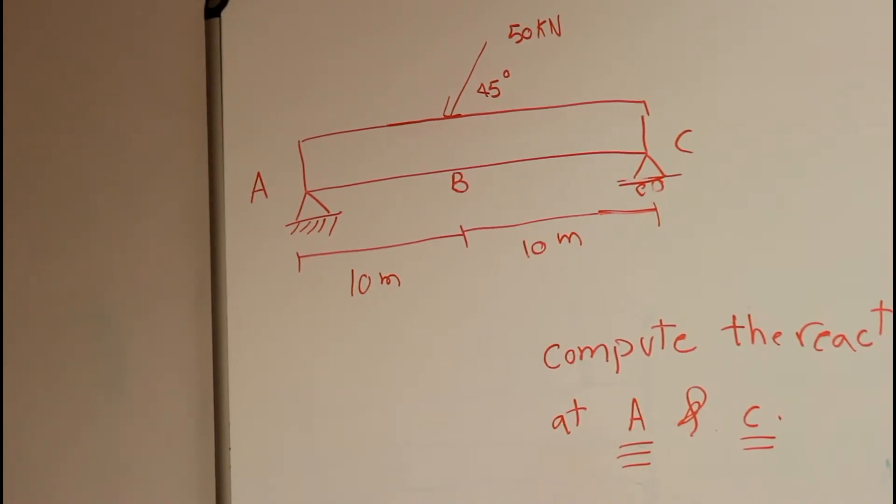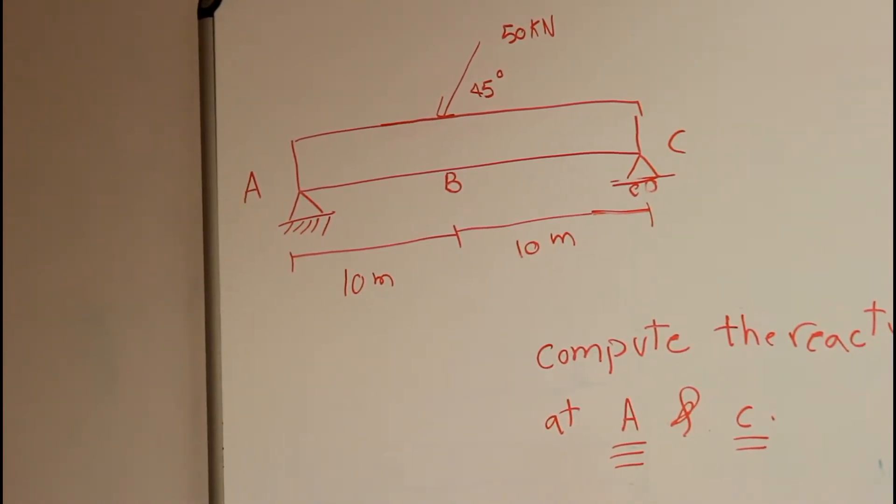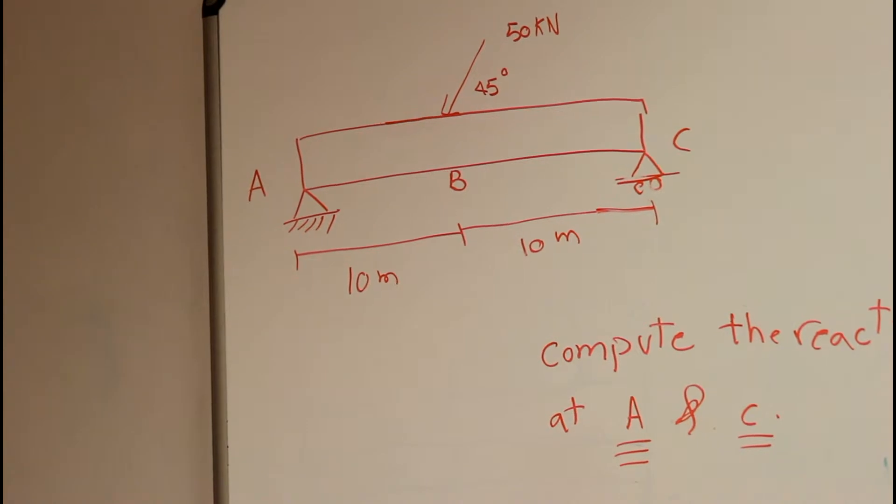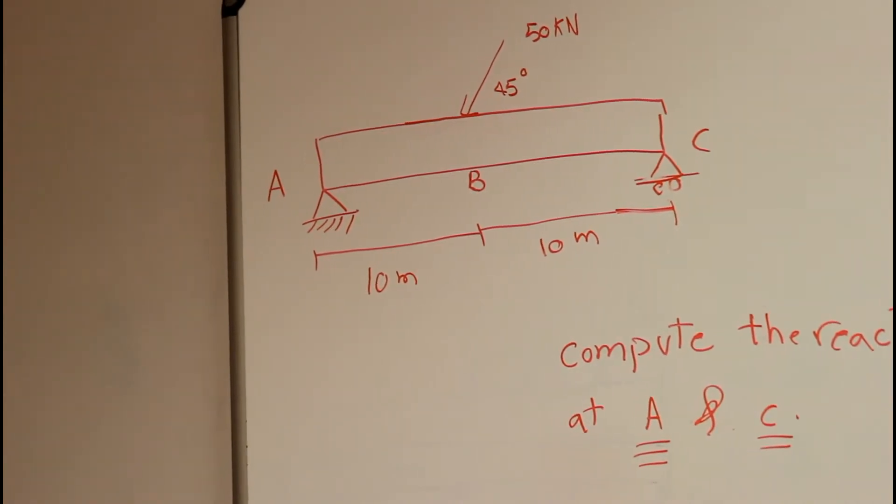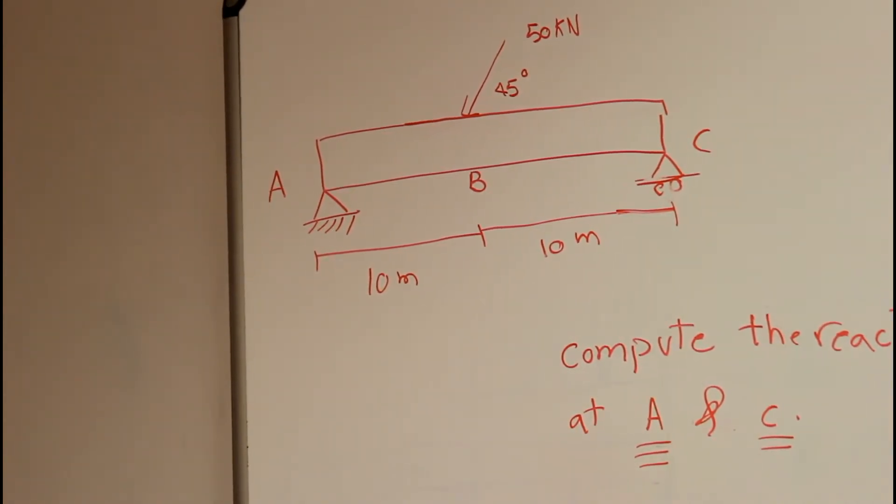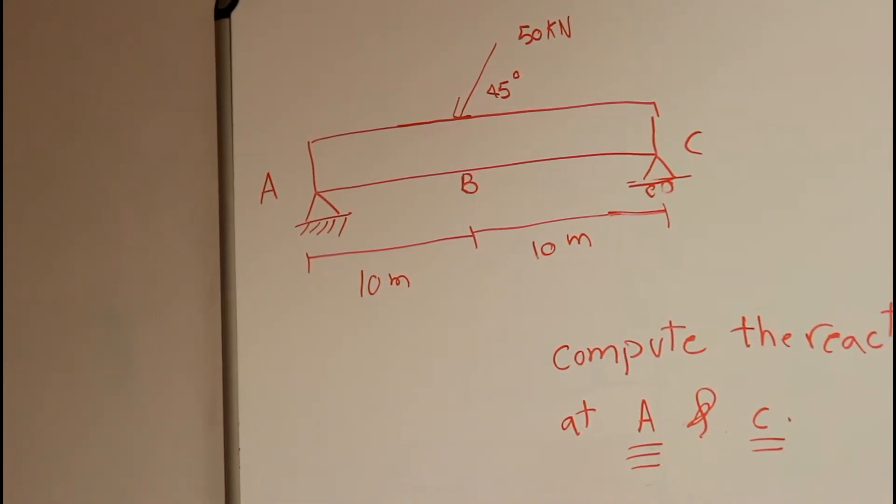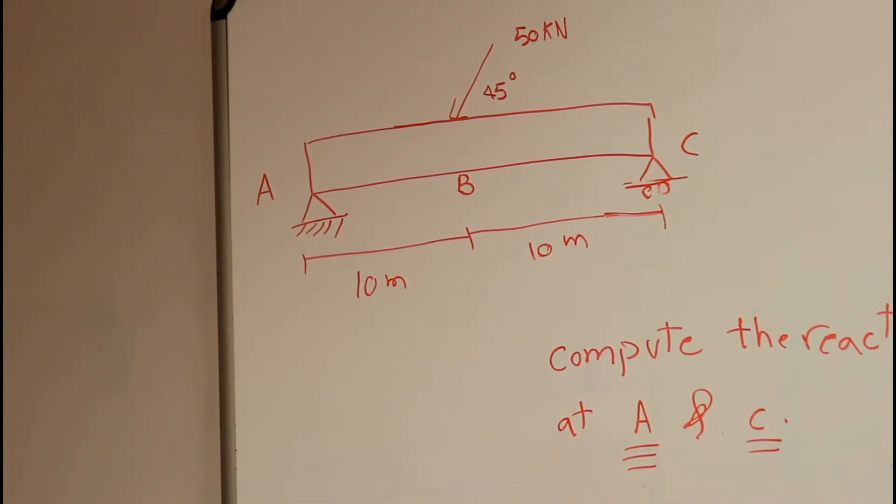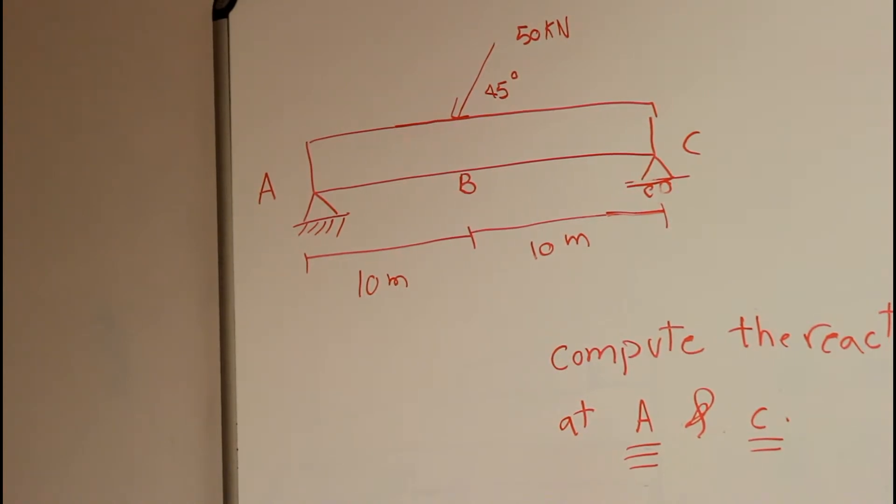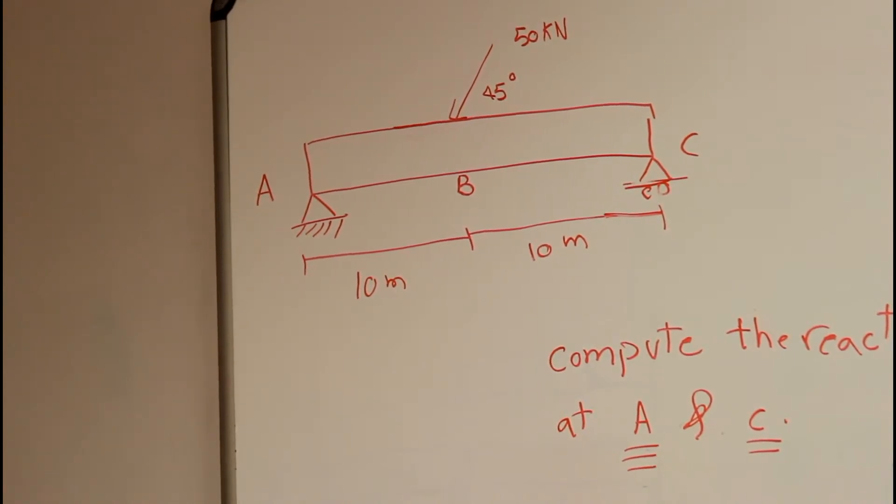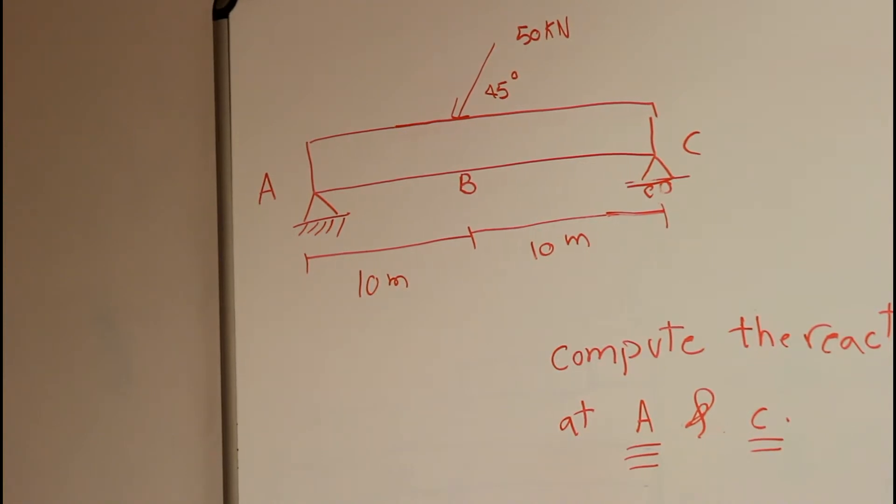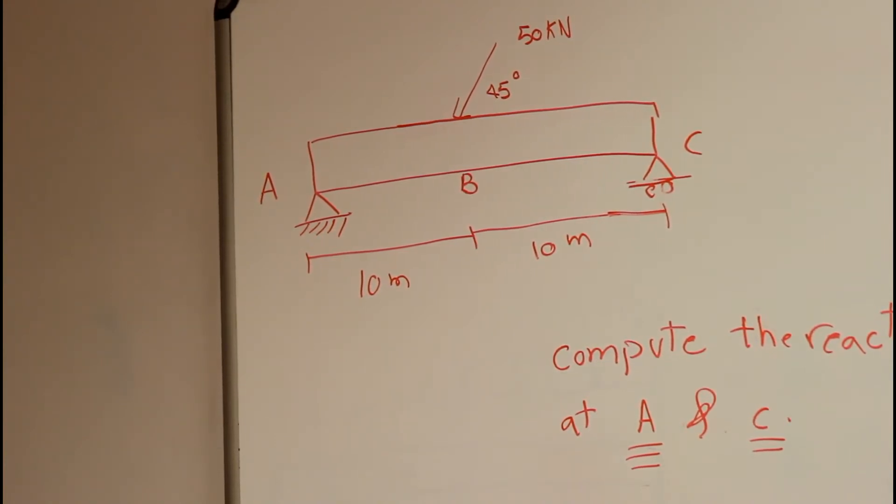But in this case, this force is going to be going to the left direction, and the vertical force is going to go downward. So you have to compute these forces first, and then you go ahead and solve these problems. And the other thing that you might get confused of is that these both forces are acting at the center of the beam.